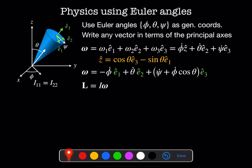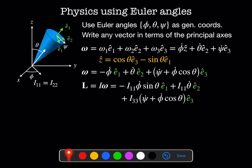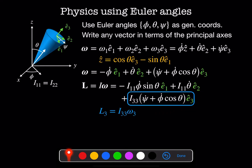Likewise, the angular momentum in this coordinate system is I times omega, or I11 omega1 in the E1 direction, I22 omega2 in the E2 direction, and I33 omega3 in the E3 direction. In this coordinate system, the total angular momentum is minus I11 phi dot times sine theta in E1, plus I11 times phi dot in E2. Note that I11 and I22 are the same, so I'll always write I11. Plus I33 times psi dot plus phi dot cosine theta in the E3 direction. We know this last term is just L3, equal to I33 times omega3, which tells us that term is just omega3.